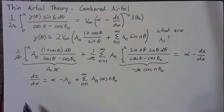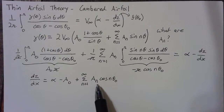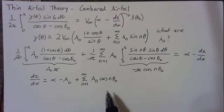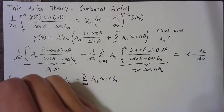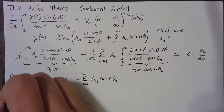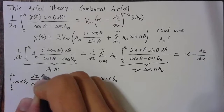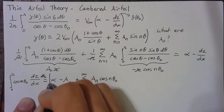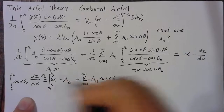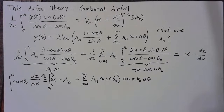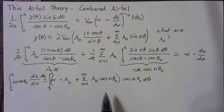This links our aₙ terms to our slope dz/dx. What we need to do next is evaluate each of these aₙ terms. We use a trick from Fourier analysis: integrate both sides from 0 to π multiplied by cos(mθ₀) dθ₀, and then cycle through different values of m to work out what each term will be.